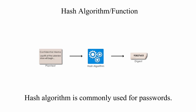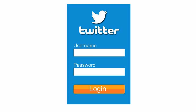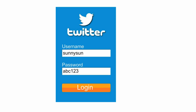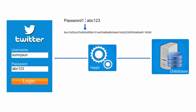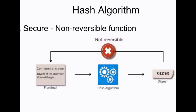Hash algorithm is commonly used for passwords. For example, when I log into Twitter, I type in Sunny Sun as my username and my password abc123. When I click submit, my password would be hashed to a digest or hash. Hash algorithm is not reversible. Given a hash value, I could not get its original input.